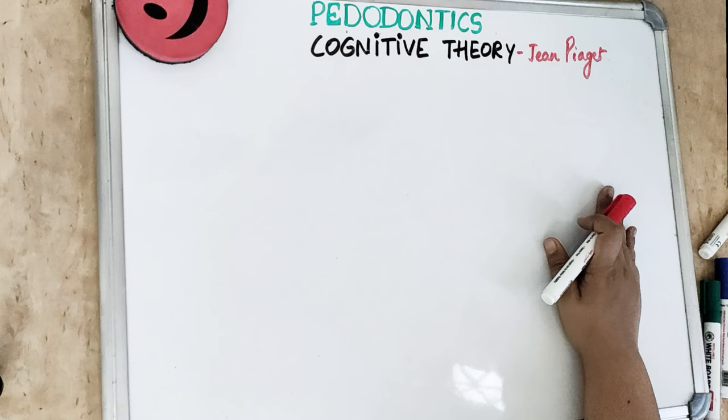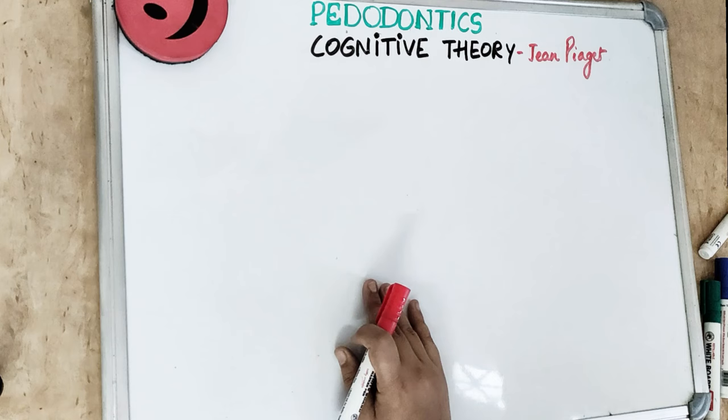This is one of the psychodynamic theories. We have already covered two psychodynamic theories: Freud's Theory of Psychosexual Development and the Psychosocial Theory by Eric Erikson. Today's topic is the Cognitive Theory by Jean Piaget.